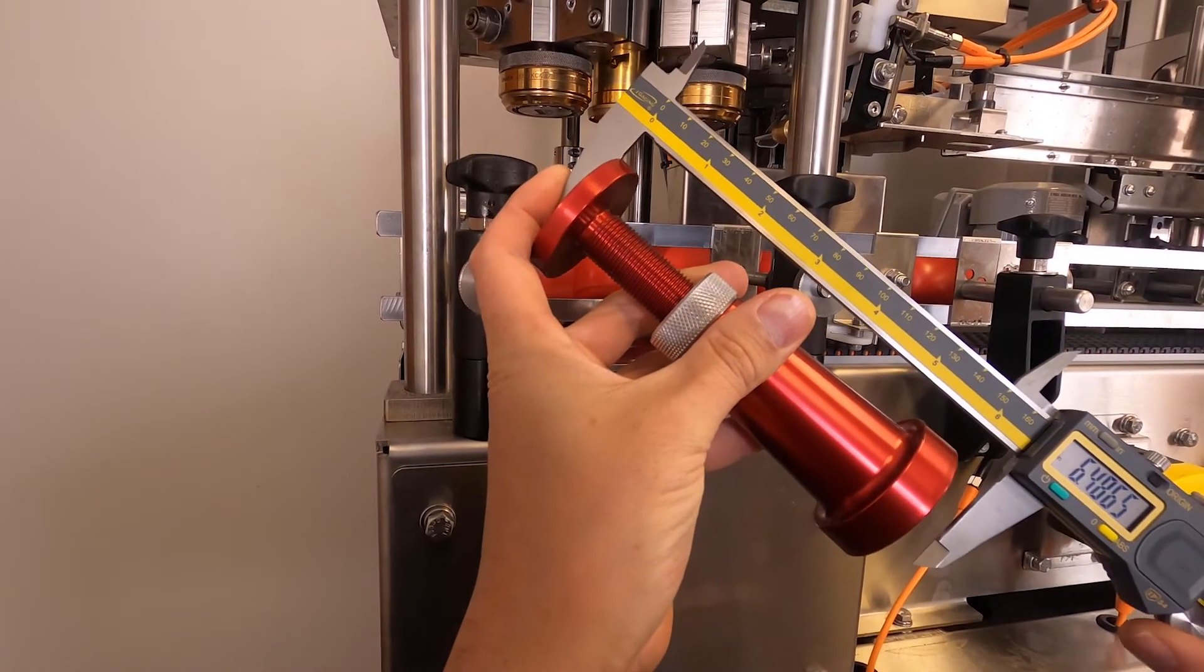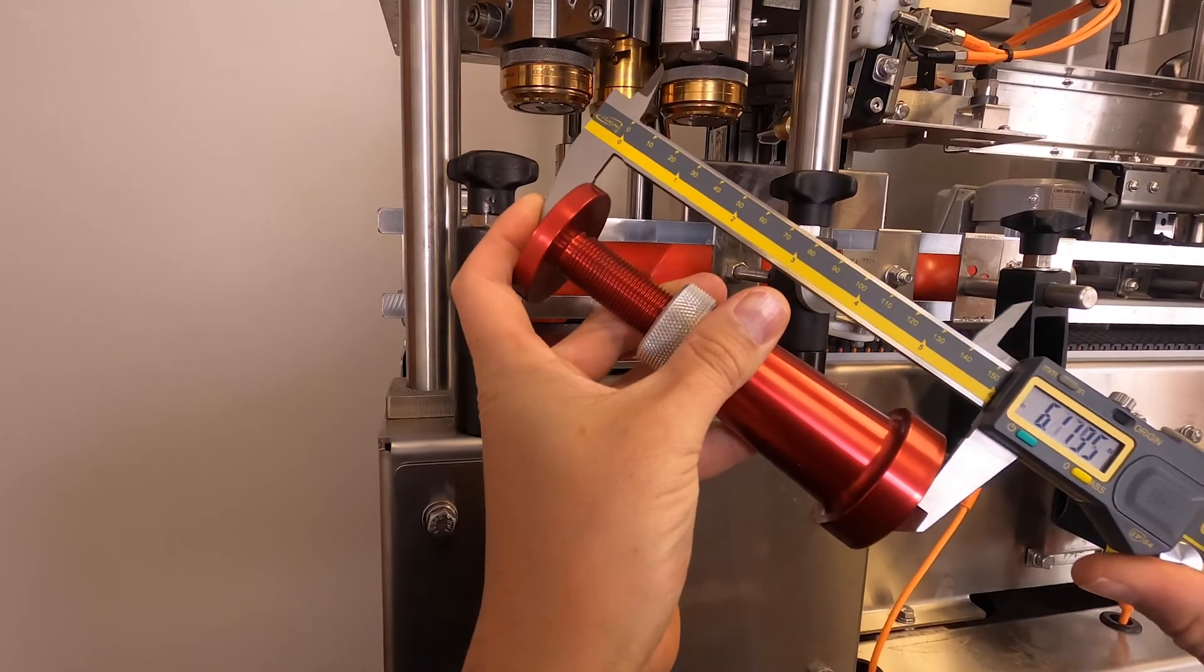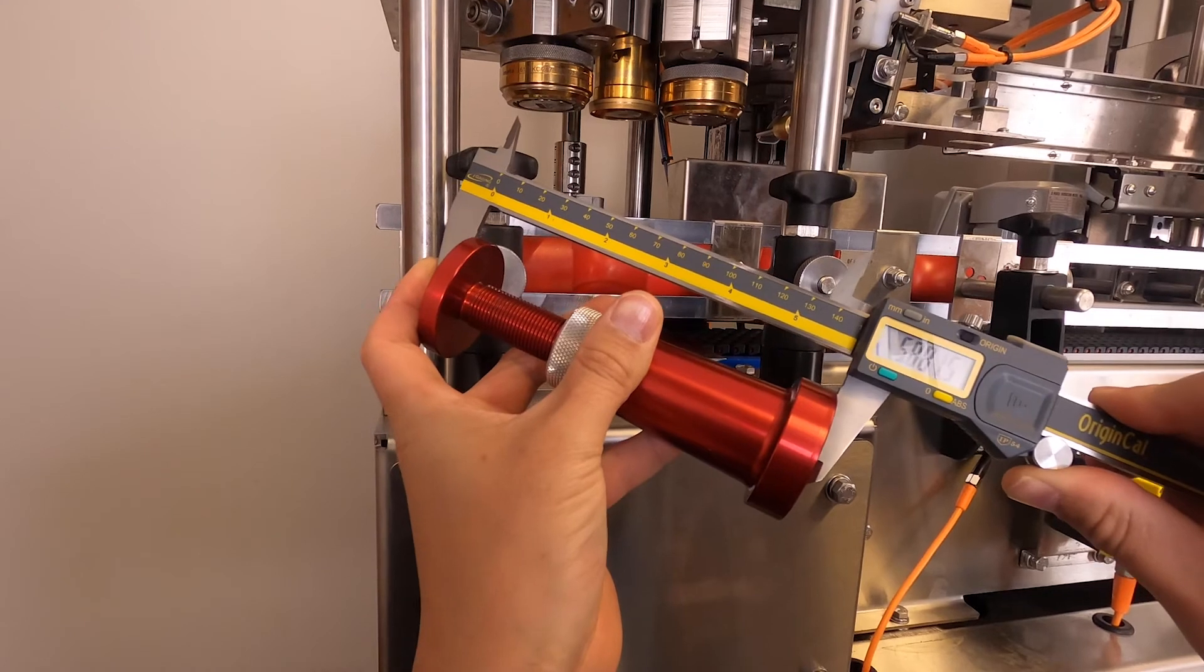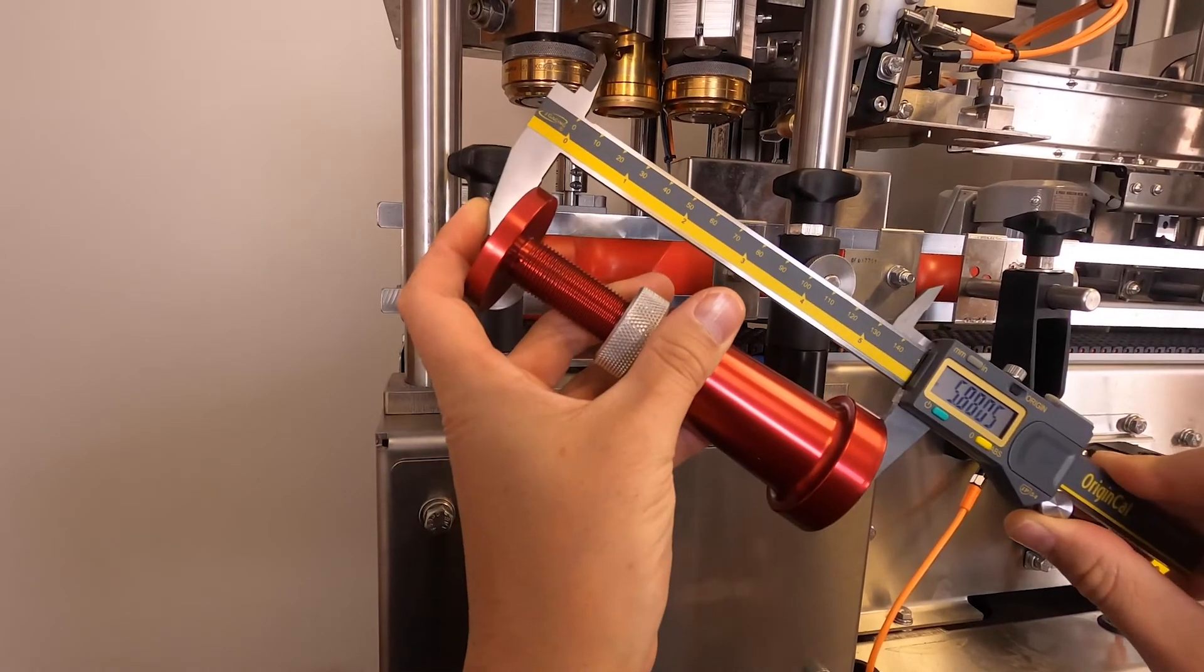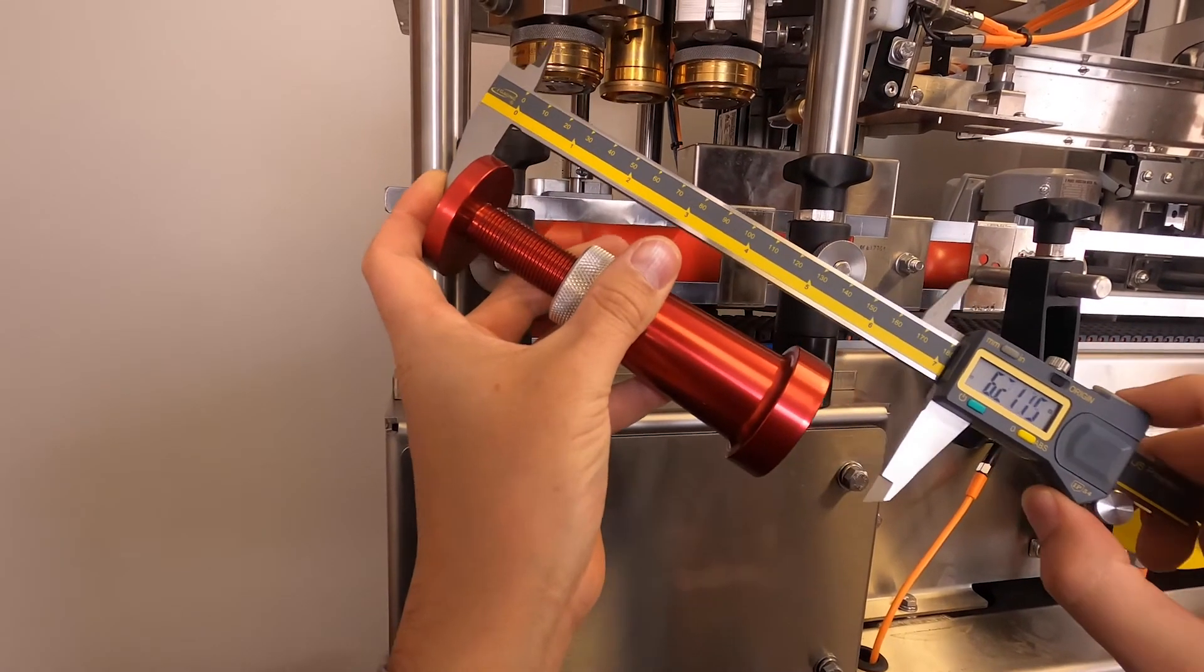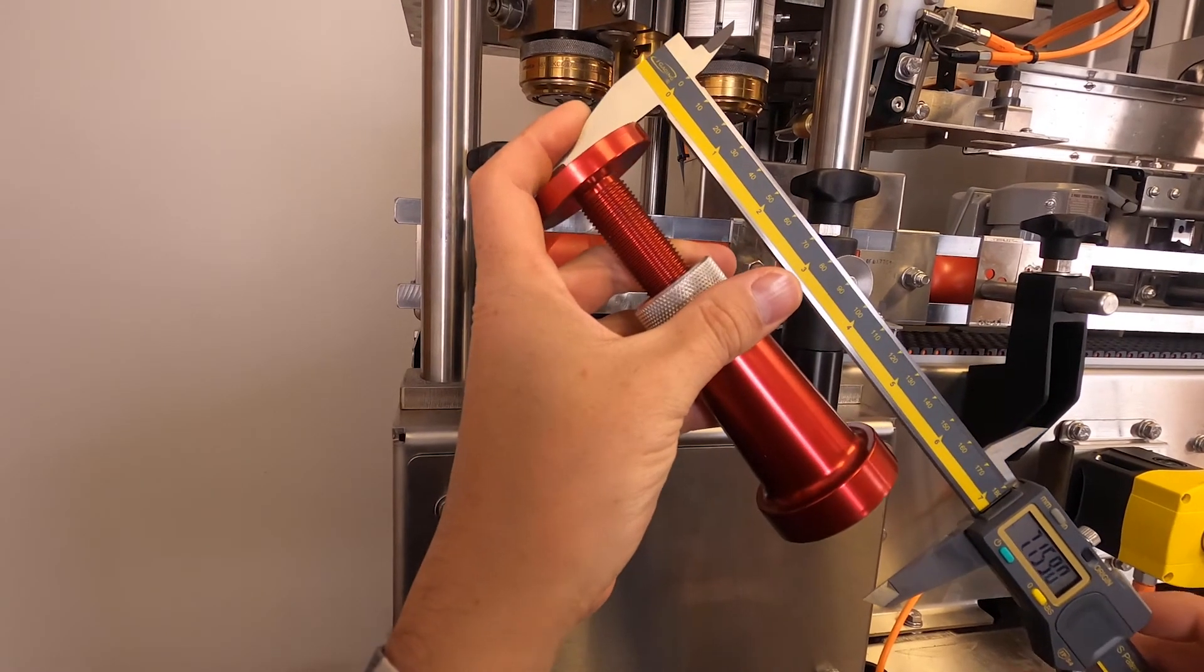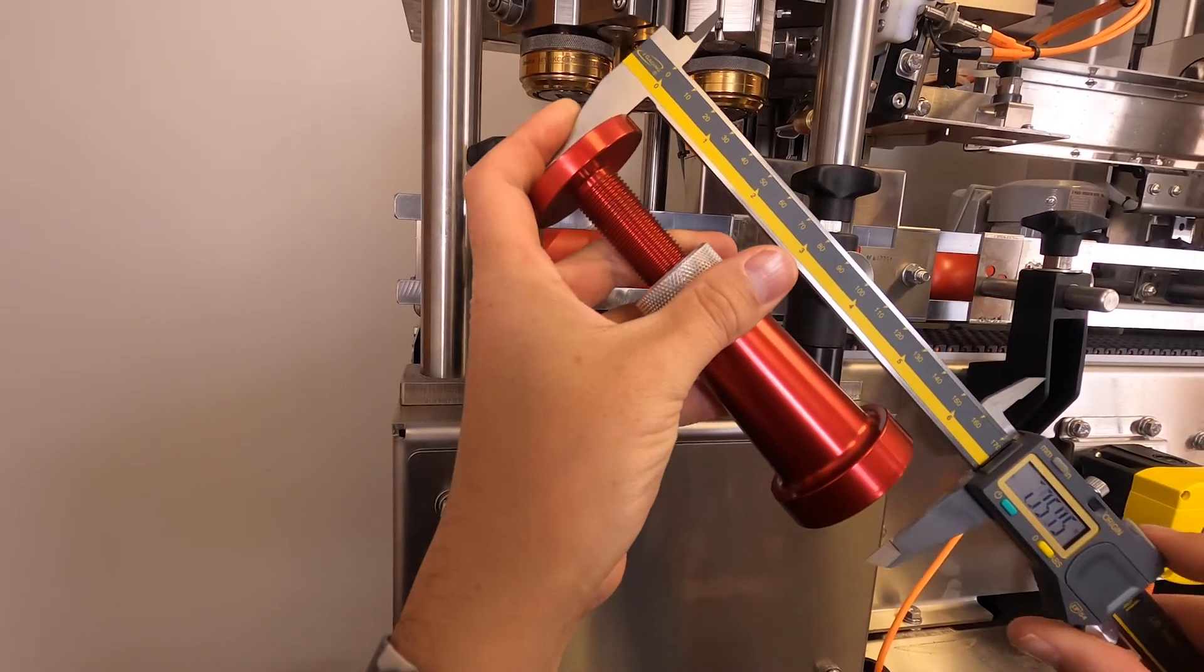Compare your current pin height to the values provided on the spec sheet. To be considered in spec, the pin height needs to be within minus five thousandths to plus ten thousandths of the provided value. If the measured pin height is outside of this range, please refer to the pin height adjustment video.